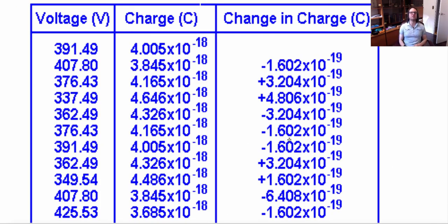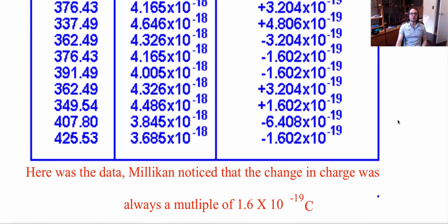He did this over and over and found the charges always went up by 1.6 × 10⁻¹⁹ coulombs in discrete quantities. There were always consistent quantities of 1.6 × 10⁻¹⁹ coulombs. So since the charges were always multiples of 1.6 × 10⁻¹⁹ coulombs, he concluded that an electron has a charge of 1.6 × 10⁻¹⁹ coulombs. With this, you could also find the mass of an electron.